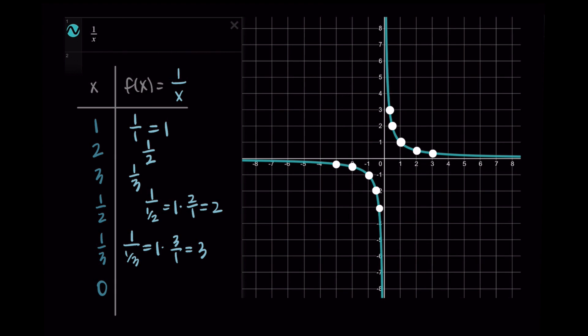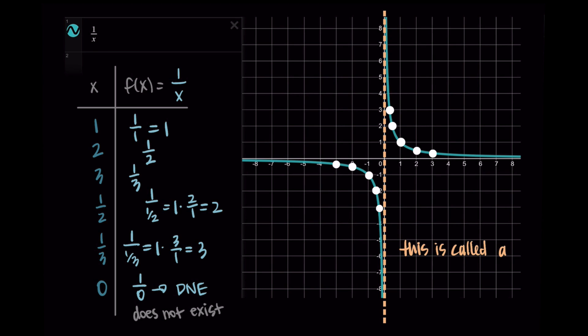Now let's talk about what happens at x equals 0. When we put 0 in for x, we get 1 divided by 0, which is exactly where we're dividing by zero — something we cannot do. So this value does not exist; 0 is not in the domain of this function. At this value, we call this a vertical asymptote — a vertical line with the equation x equals 0. The function never touches this line because 0 isn't a valid input. This is one of the key characteristics that often appears in rational functions.